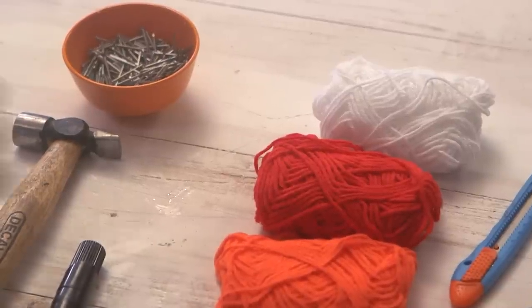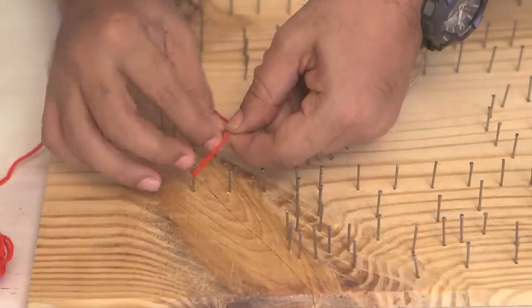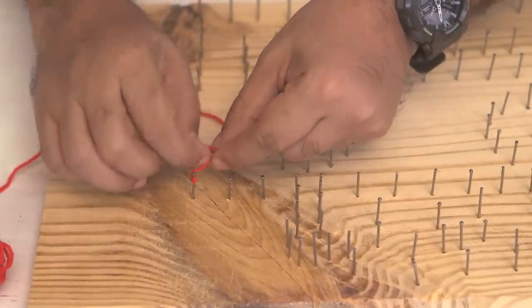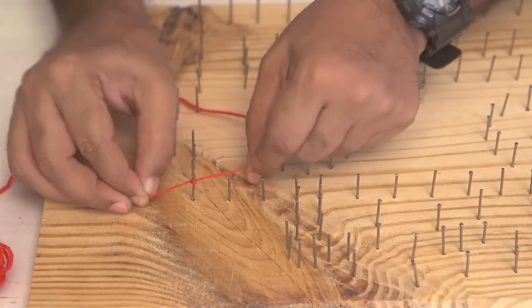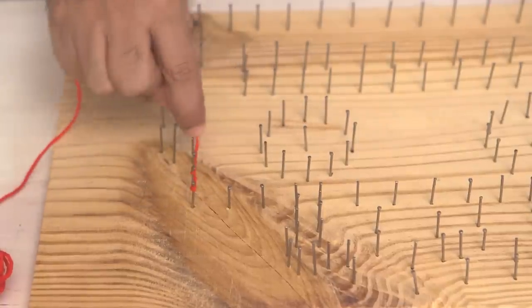And now is the fun bit. Pick up some colorful strings of wool. And then we'll just make our pattern and design. Okay, now we'll tie a knot like this. And you can start from any corner you want. And now just go around the nails.